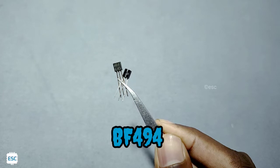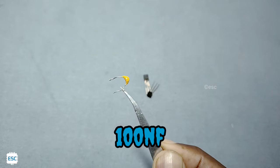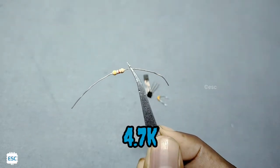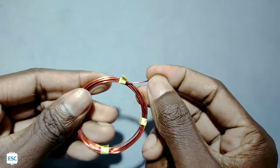For this we need two BF494 transistors, a 100nF capacitor, one 4.7K resistor, a 30PF variable capacitor, and 0.5mm enameled copper wire.